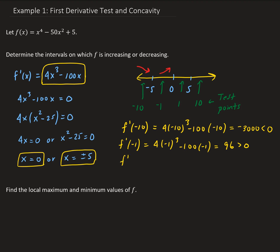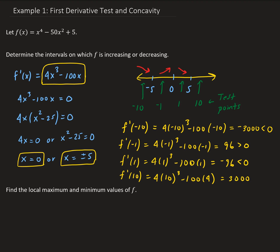Evaluating f prime at 1 gives us 4 times (1) cubed minus 100 times 1, which equals negative 96 — less than zero. So the function is decreasing between 0 and 5. The last test point is 10: f prime of 10 gives us 4 times (10) cubed minus 100 times 10, which equals 3,000, bigger than zero. So the function is increasing from 5 to infinity.